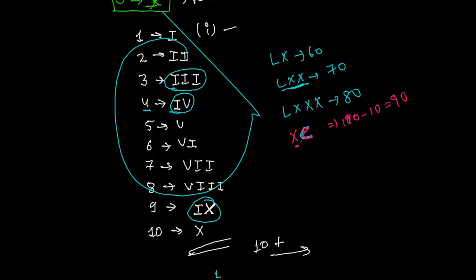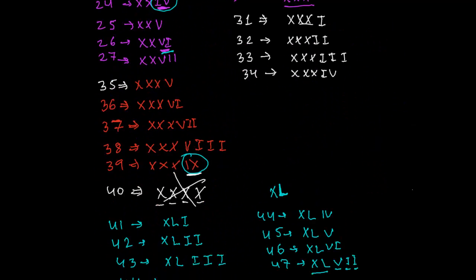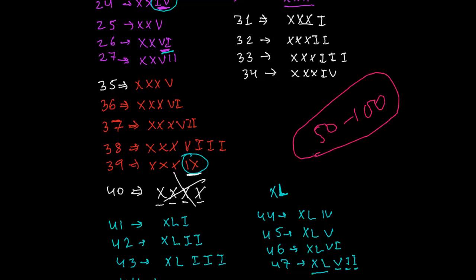Once we have 90 as XC, we can write 91 by adding I, 92 by adding II, and so on. In the next video, we'll do problems randomly between 50 and 100. After that, we'll move to numbers above 100, making three or four more videos on Roman numerals, and eventually practice adding and subtracting them.